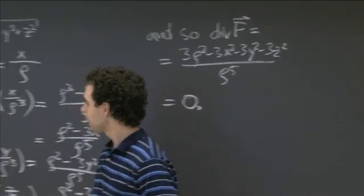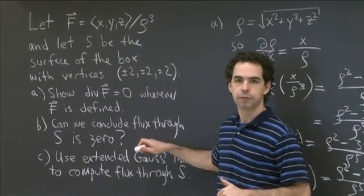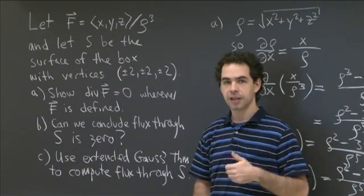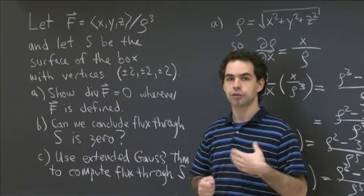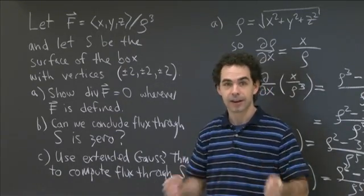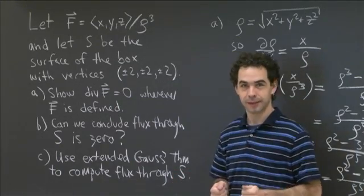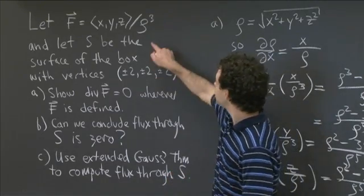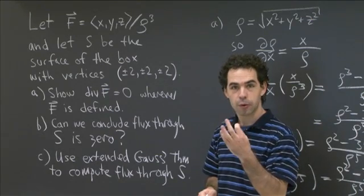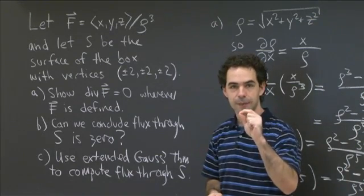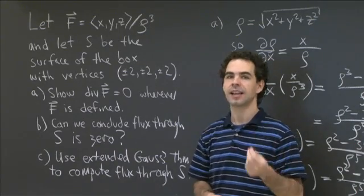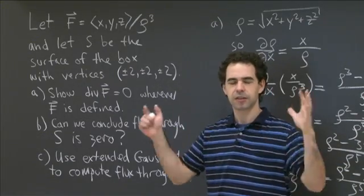So let's look at what part b was. Part b asked: can we conclude that the flux through the surface S is 0? Now remember what the divergence theorem says: the flux through a surface equals the triple integral of the divergence of that field over the interior, provided the field is defined and differentiable and nice everywhere inside. But this field has a problem — at 0, we're dividing by 0. So this field is not defined at 0. There's a single point in the middle of this cube where the field behaves badly, and that means we can't apply the divergence theorem inside this cube.